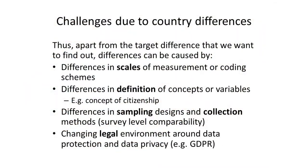In terms of challenges when harmonizing variables from different countries, you might come across the problem that the different ways a variable has been coded or measured creates a problem for harmonization. You might end up with secondary data sets that have different definitions for a similar concept — like they might measure unemployment slightly differently, or the concept of citizenship. There are also challenges about differences in sampling or collection design, which means that even though you can compare the results, maybe the populations are a little bit different, making the variables less comparable. The final challenge, as we're moving forward in the 21st century, is that social researchers increasingly have to be aware of the legal environment around data protection and data privacy — like recently we had the GDPR going into effect in Europe, which is really meant to address the issue of data privacy and data protection.